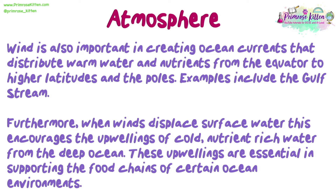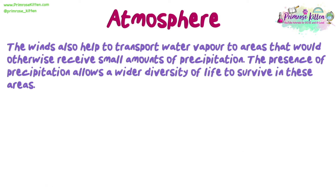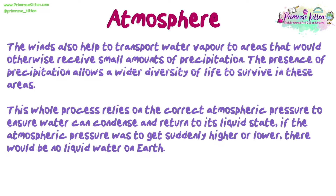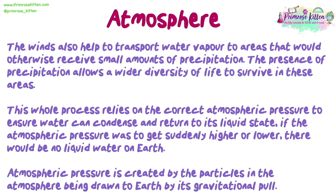Furthermore, when winds displace surface water, this encourages the upwellings of cold, nutrient-rich water from the deep ocean. These upwellings are essential in supporting the food chains of certain ocean environments. The winds also help to transport water vapour to areas that would otherwise receive small amounts of precipitation. The presence of precipitation allows a wider diversity of life to survive in these areas. This whole process relies on the correct atmospheric pressure to ensure water can condense and return to its liquid state. If the atmospheric pressure were to suddenly get higher or lower, there would be no liquid water on Earth. Atmospheric pressure is created by the particles in the atmosphere being drawn to Earth by its gravitational pull.